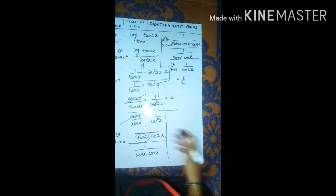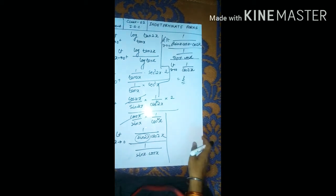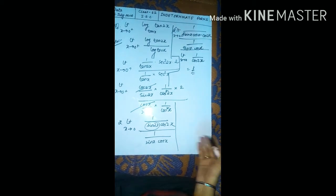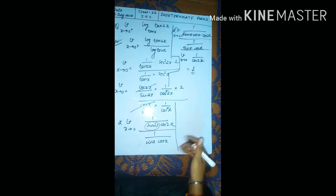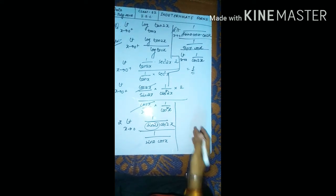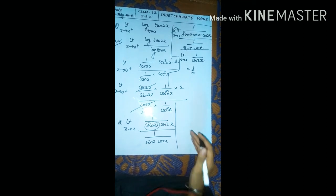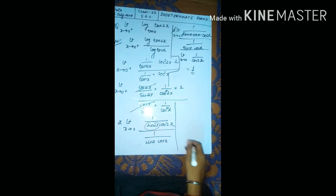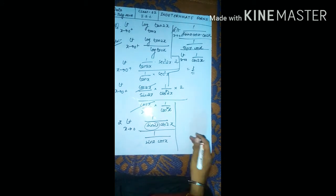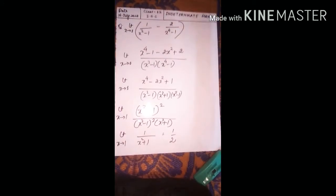As we did in the previous exercise, we differentiate the numerator and denominator and keep checking whether the result is still in ∞/∞ form. As long as you still get ∞/∞ form, you must continue applying L'Hôpital's rule.